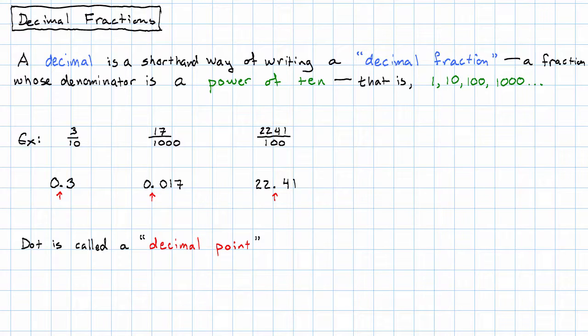The answer is that the number of digits after the decimal point—one digit, three digits, two digits—is always the number of zeros after the one in the denominator. One zero gave us one digit. Three zeros gave us three digits. Two zeros gave us two digits.